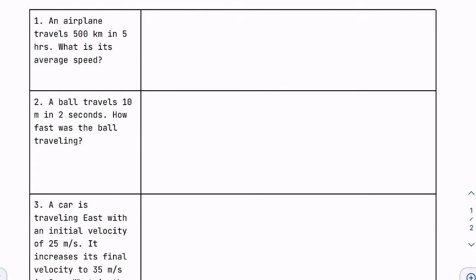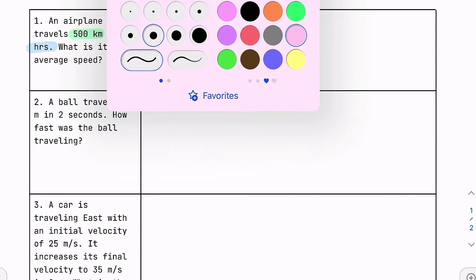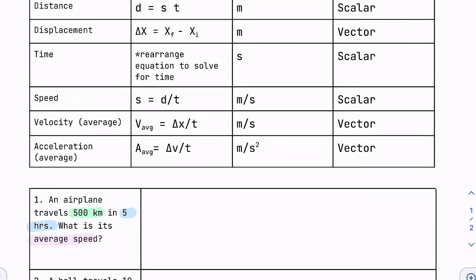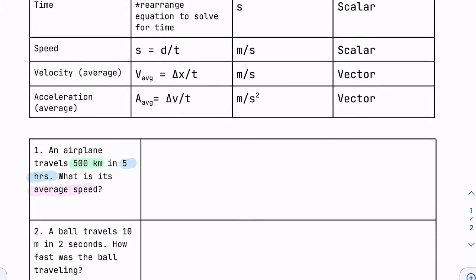We are given variables 500 kilometers and 5 hours, and we're looking for average speed. So we need to determine what is 500 kilometers? What variable does that correspond to? What is that telling us? Is it telling us the distance, displacement, time, speed, velocity?